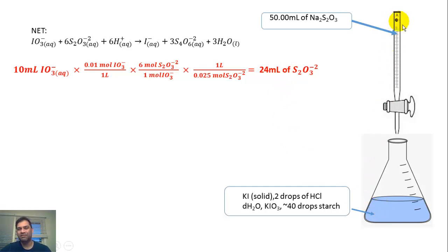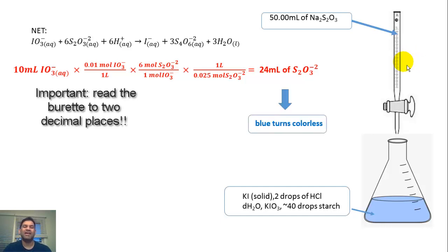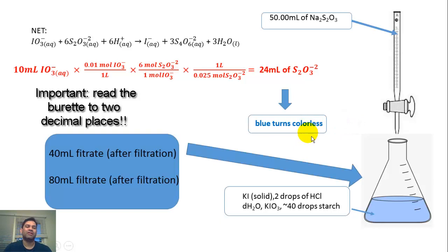The procedure requires you to go all the way down to about 21 or 22 mL, then add the starch, and then go drop by drop until the blue disappears. The point where all the S2O3²- reacts with all the IO3- — the equivalence point — is when the blue is gone.